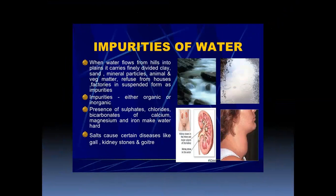When water flows from hills to plains, it carries finely divided clay, sand, mineral particles, animal and vegetable matter. Refuse from houses and factories in suspended form is also an impurity. Impurities are either organic or inorganic. Presence of sulfates, chlorides, and bicarbonates of calcium, magnesium and iron make water hard. These salts cause certain diseases like gallstones, kidney stones and goiter.